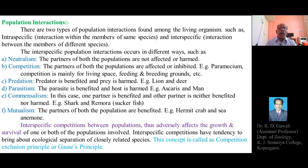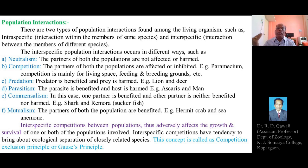The second type is competition. In competition, the partners of both populations are affected or inhibited. For example, in Paramecium, competition is mainly for living space, feeding grounds, or breeding grounds. In the interaction between two different species, both partners are affected or inhibited.